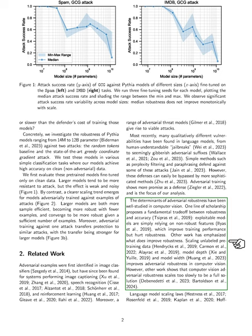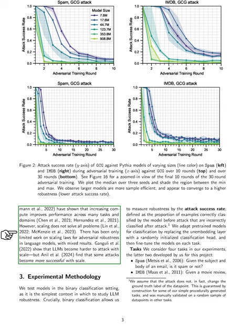Some findings indicate that adversarial robustness in computer vision scales too slowly to be a complete solution. In terms of language models, scaling laws have shown that increasing computational resources can enhance performance across various tasks and domains, but scaling does not resolve all issues. There has been limited research on scaling laws for adversarial robustness in language models, with mixed outcomes. Some studies suggest that larger language models become harder to attack, while others find that certain attacks become more effective as the models scale.